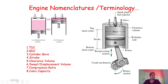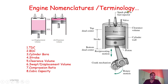Now we are going to discuss the engine terminology or nomenclature. The components include the walls mechanism, inlet valve, exhaust valve, and spark plug. The key terms are: top dead center (TDC), bottom dead center (BDC), stroke, cylinder bore, clearance volume, swept or displacement volume, compression ratio, and cubic capacity. All these terms together constitute engine nomenclature or terminology.